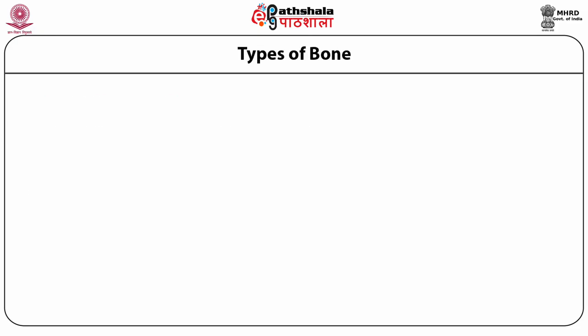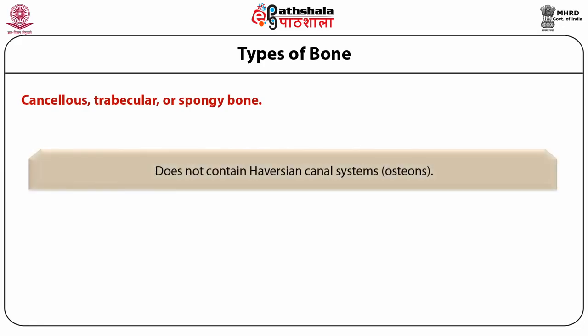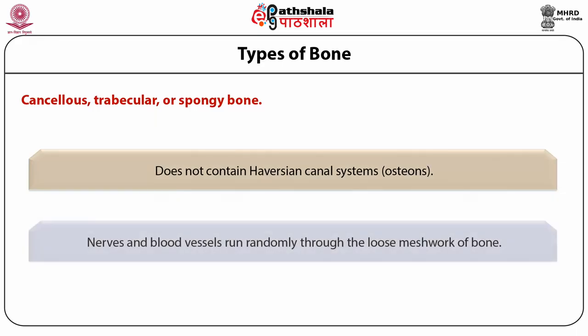The second type of bone is cancellous, trabecular, or spongy bone. It does not contain the Haversian canal system, that is osteons, and the nerves with blood vessels run randomly through the loose meshwork of bone.